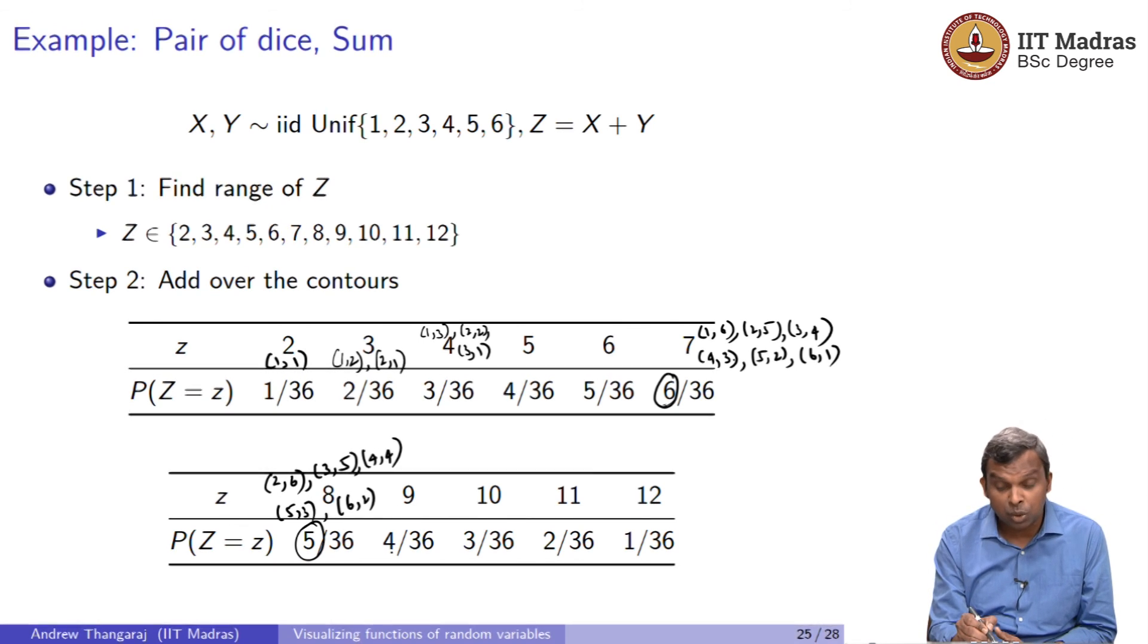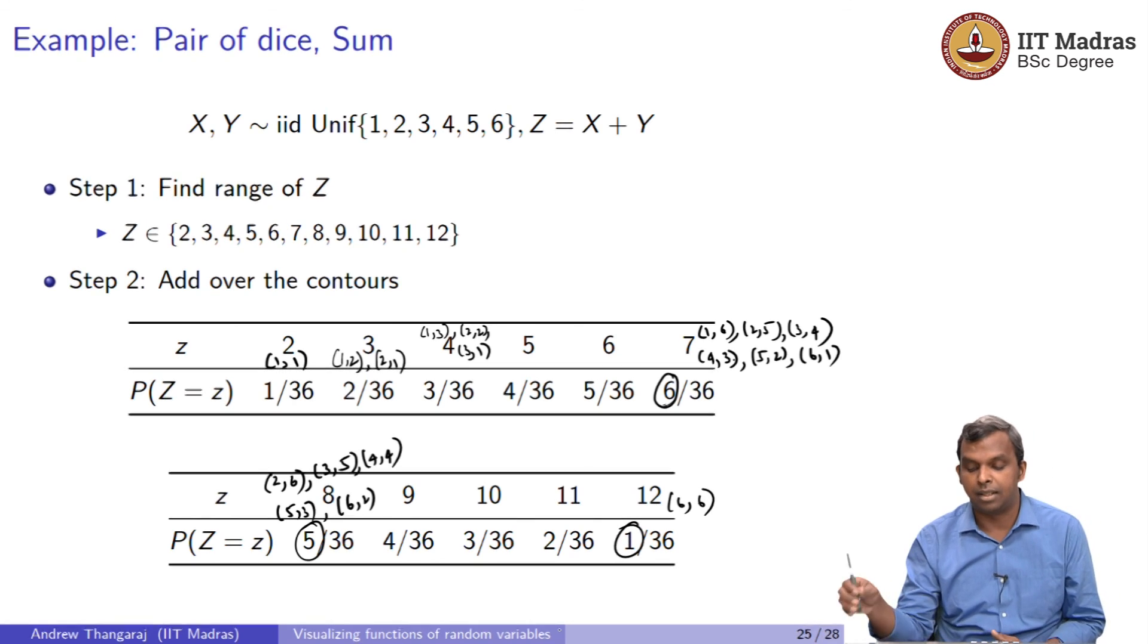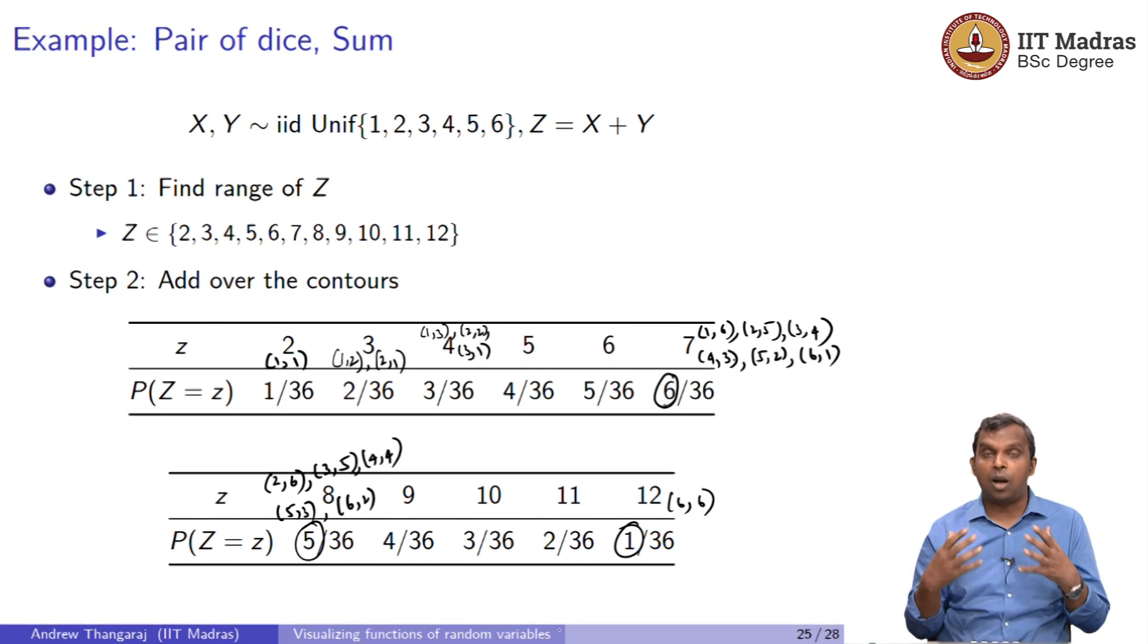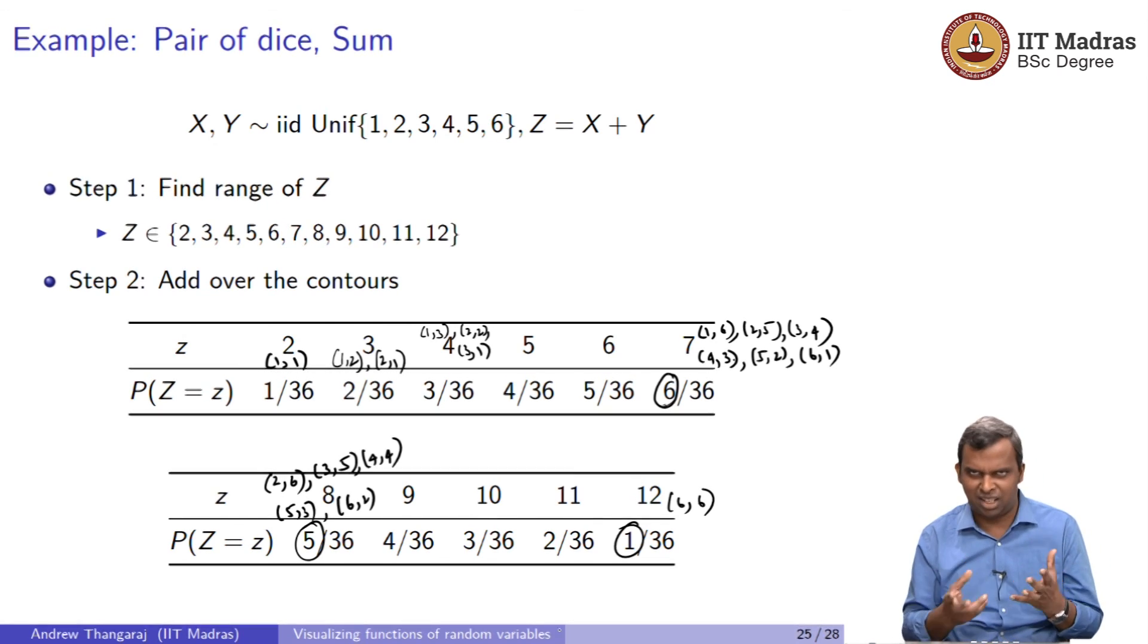Likewise you will see for 9, it is reduced once more, 4 by 36. For 10, it has reduced one more, 11, it has reduced one more, 12, it has reduced one more. Finally for 12, it is only 6 comma 6 and that gives you 1 by 36. Notice how you cleverly make the table again in your head identifying patterns either through the contours graphically or in your head with algebraically manipulating how many possibilities are there. And since it is all uniform, it is very easy to count it up and you get the answer. Hopefully this gives you a little bit more of illustration and feel for how sums are computed.